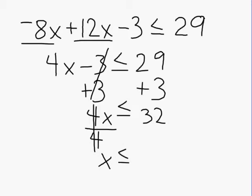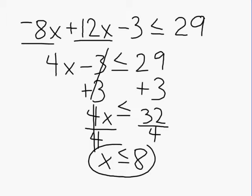We drop down our inequality sign and we must remember to also divide the other side by 4 as well. And 32 divided by 4 gives us a result of 8. So x can be anything we want in the original inequality as long as x is less than or equal to 8, and it is those values that would satisfy our inequality.